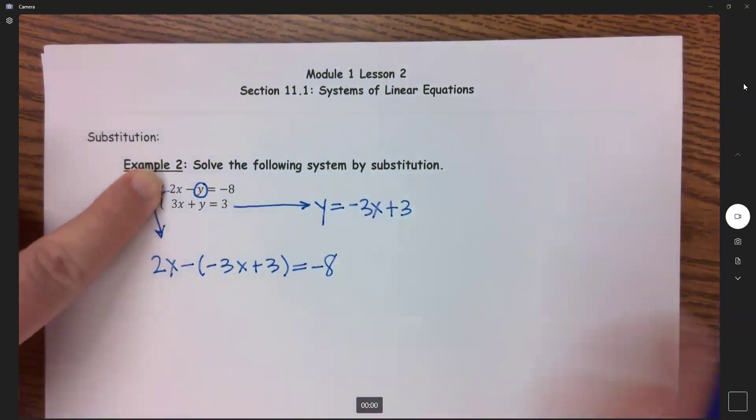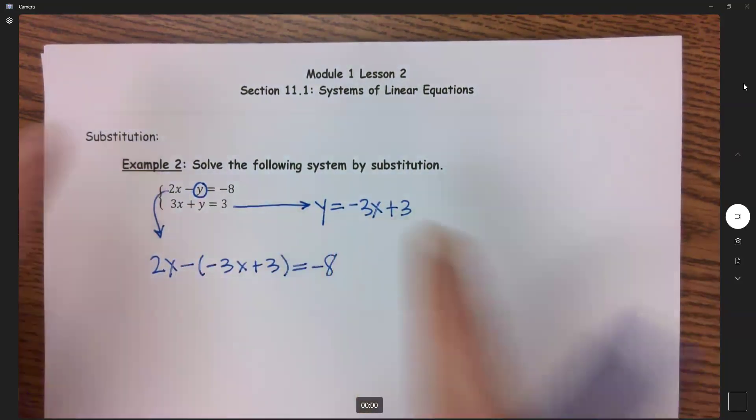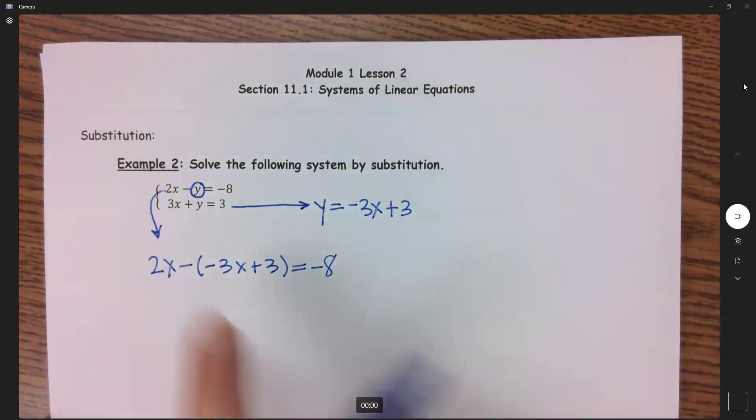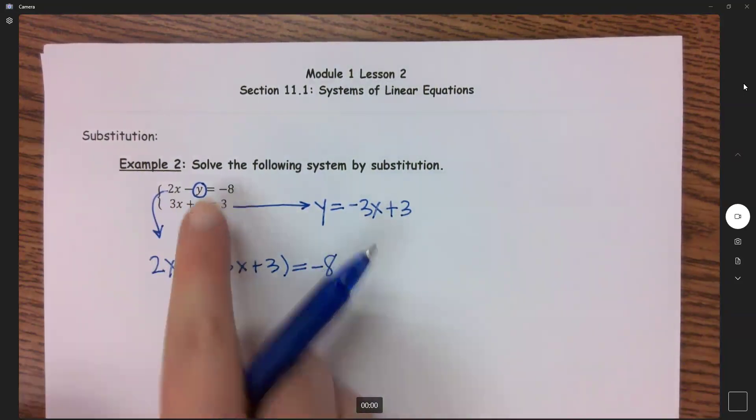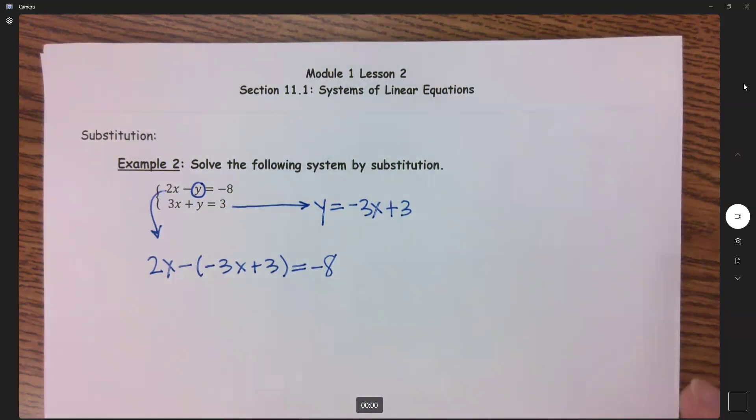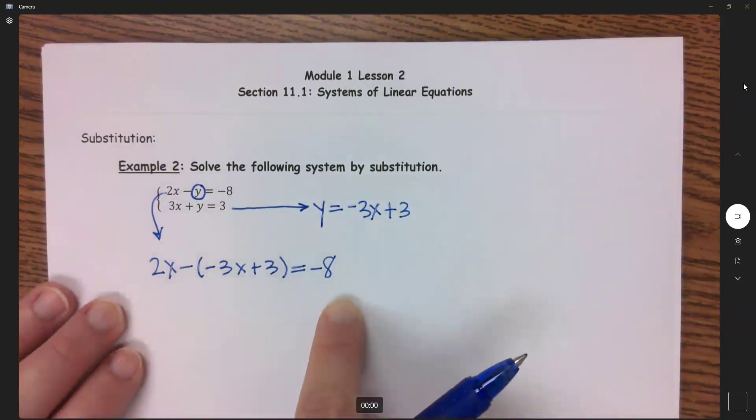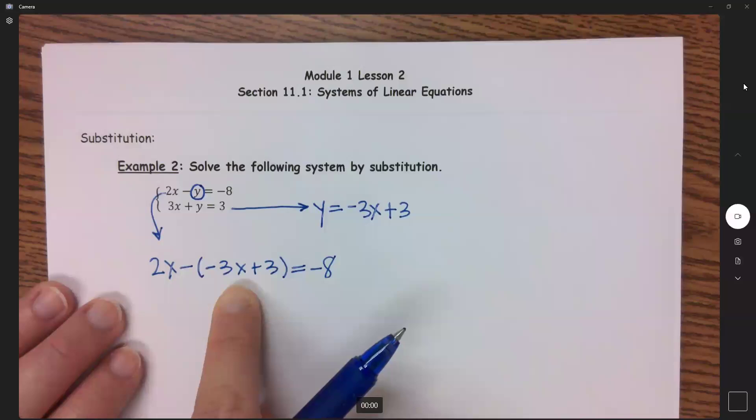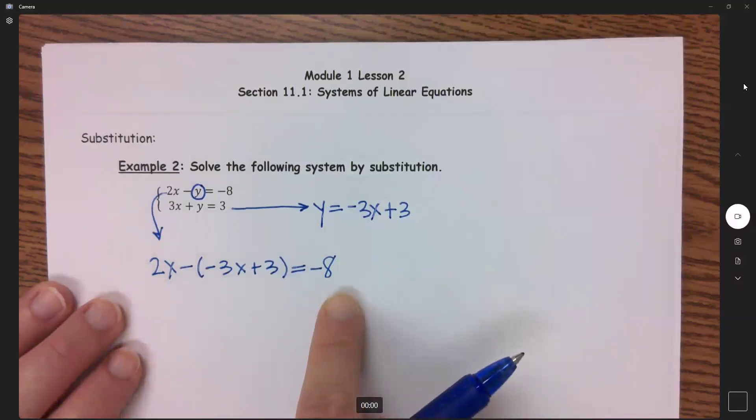I rewrote this but in place of y I substituted that x. So now solve. Before I couldn't solve this equation because I had two unknowns. I didn't know x and I didn't know y, but now that I have substituted in my y and it equals something with an x, now I have a linear equation with one unknown. I can solve that.